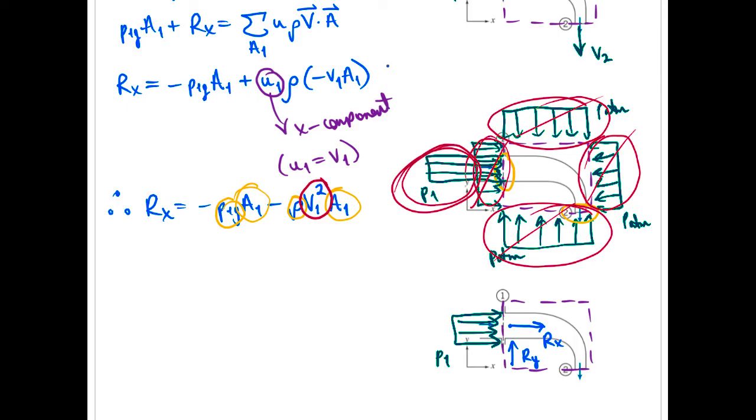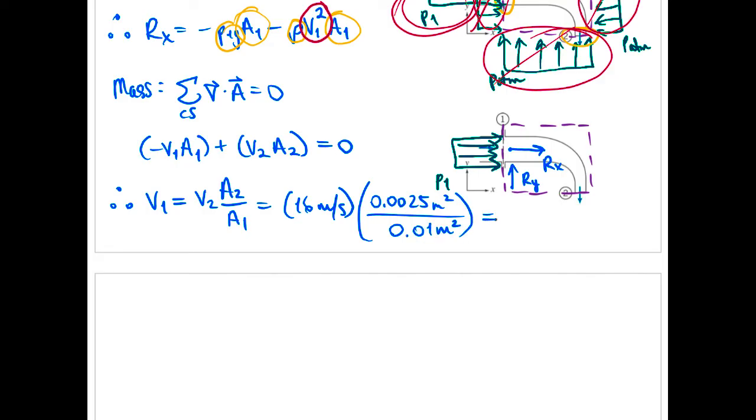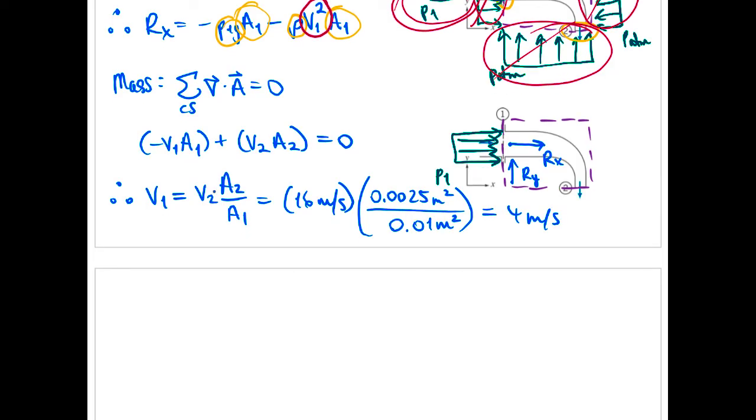So we've got negative for v1 there because it's entering and a positive for v2 because it's exiting. Okay four meters per second. Now let's go and sub in for our x.